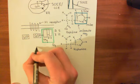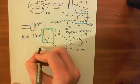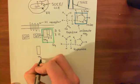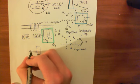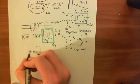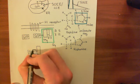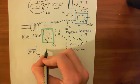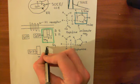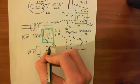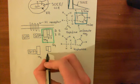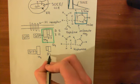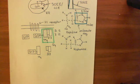Once GTP is bound to alpha Q, it no longer associates with the beta and gamma subunits. The beta and gamma subunits go off together — they're henceforth referred to as the beta-gamma subunit. The alpha Q-GTP subunit cleaves off separately.